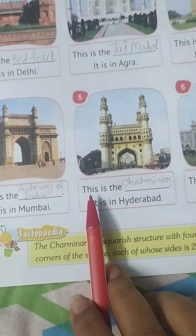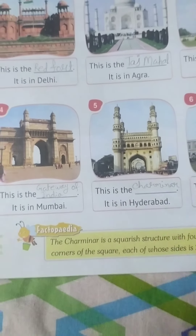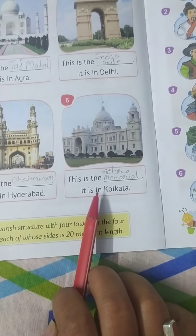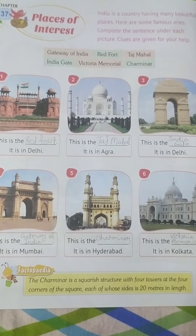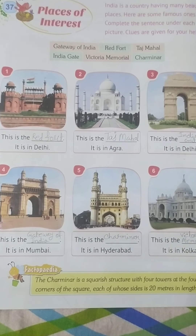Number five: this is the Charminar. It is in Hyderabad. Next is the Victoria Memorial. It is in Kolkata.